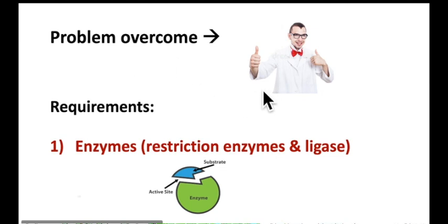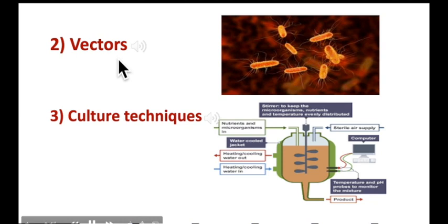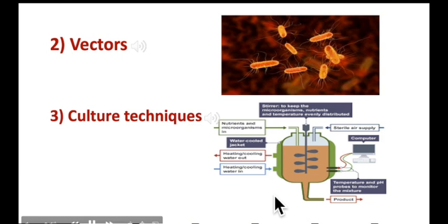Another problem is product formation — the host organism may not show the valuable characteristics, for example it may not make a particular protein even if it has the DNA that codes for that protein. Scientists encountered all these problems, but technological advances have overcome them. The key to success has been the discovery of enzymes, vectors, and culture techniques. These are the requirements needed to carry out genetic engineering.